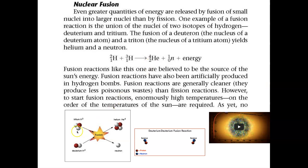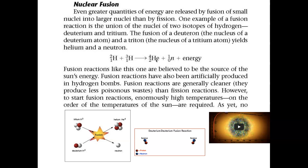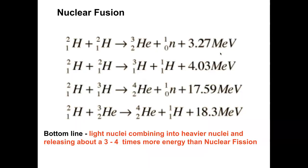Fusion is something we want to move toward. Light nuclei come together to make a slightly heavier one with a tremendous amount of energy — this is what the stars use, and it's a clean source. Here are some fusion examples: two hydrogens making helium, measured in mega electron volts. It is very exothermic — light nuclei combining into heavier nuclei releasing three to four times more energy than nuclear fission.